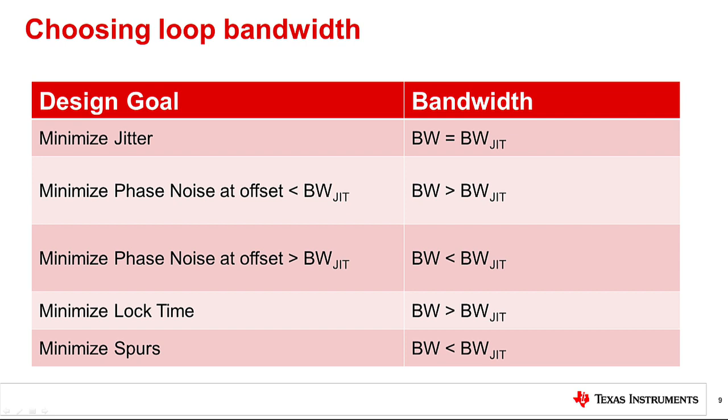However, if a measurement or simulation suggests that spurs are too high, then you could reduce the loop bandwidth to improve the spurs. On the other hand, if the lock time was too slow, consider increasing loop bandwidth.